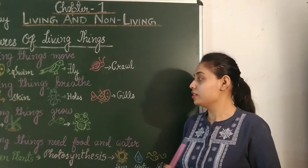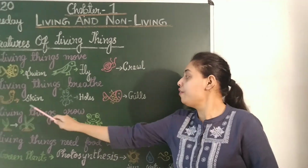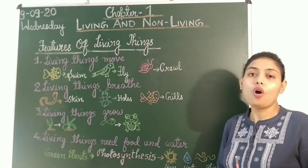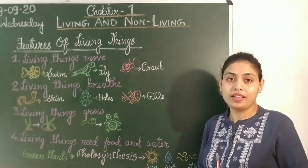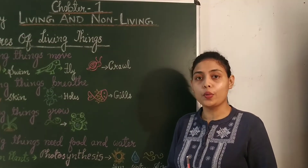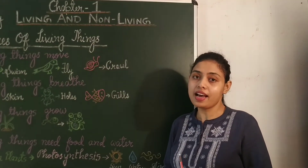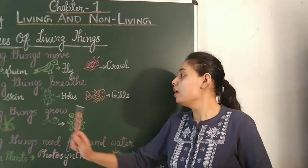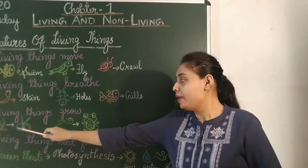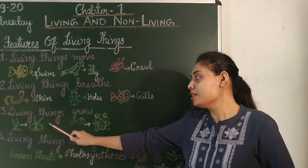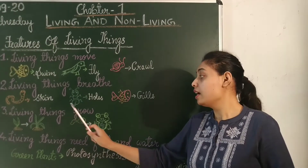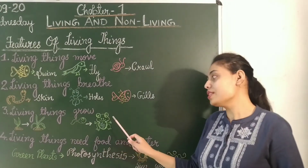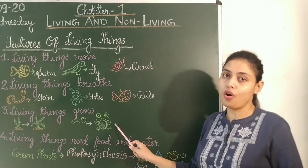Third feature: living things grow. All living things grow, get old and die. For example, a baby plant grows into a bigger plant. A tadpole grows into a frog.